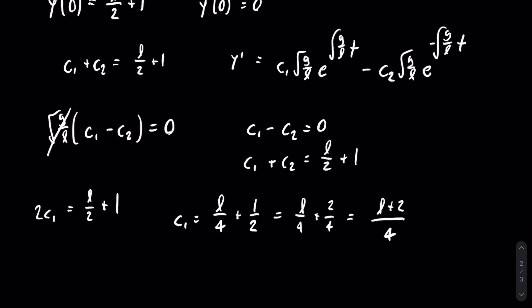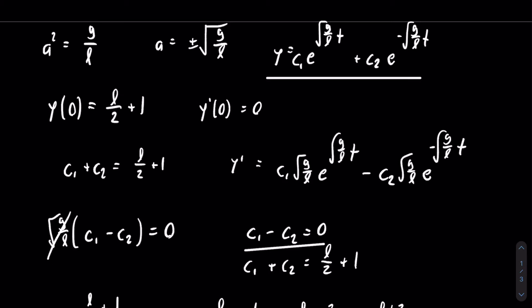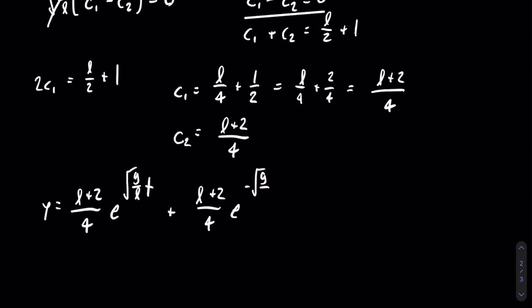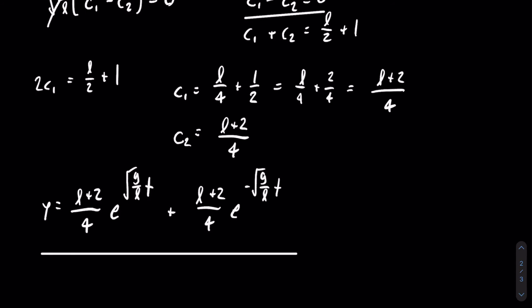From the first equation we can see that C1 equals C2, so C2 also equals (l+2)/4. Now that we have our two constants, we plug them back into y(t) to get the final answer: y(t) equals (l+2)/4 · e^(sqrt(g/l)·t) plus (l+2)/4 · e^(-sqrt(g/l)·t). This is the final answer and tells us exactly how far the bottom of the rope is from the table at any point in time.